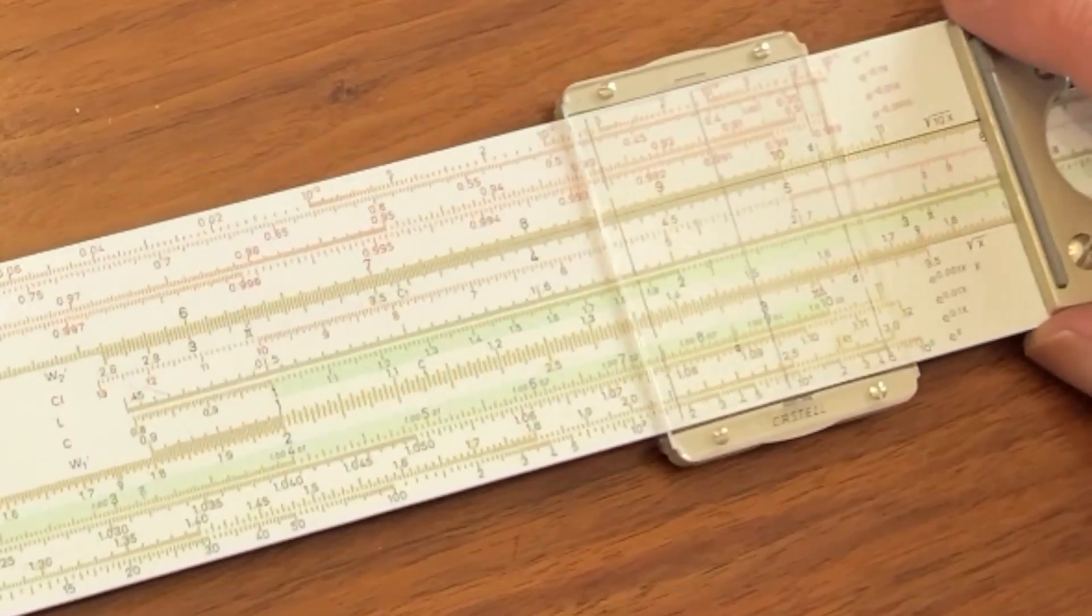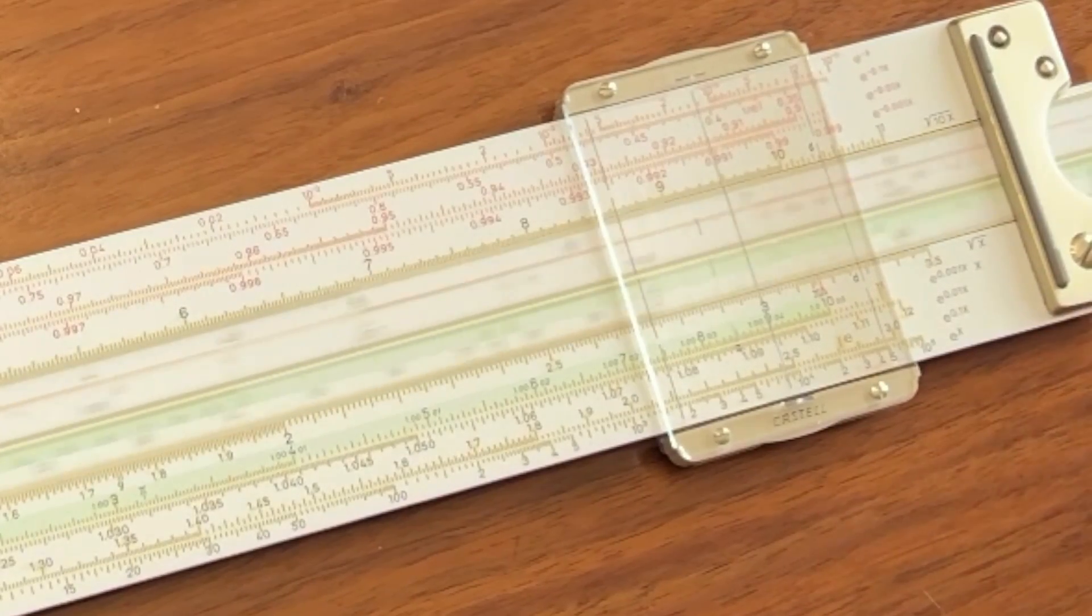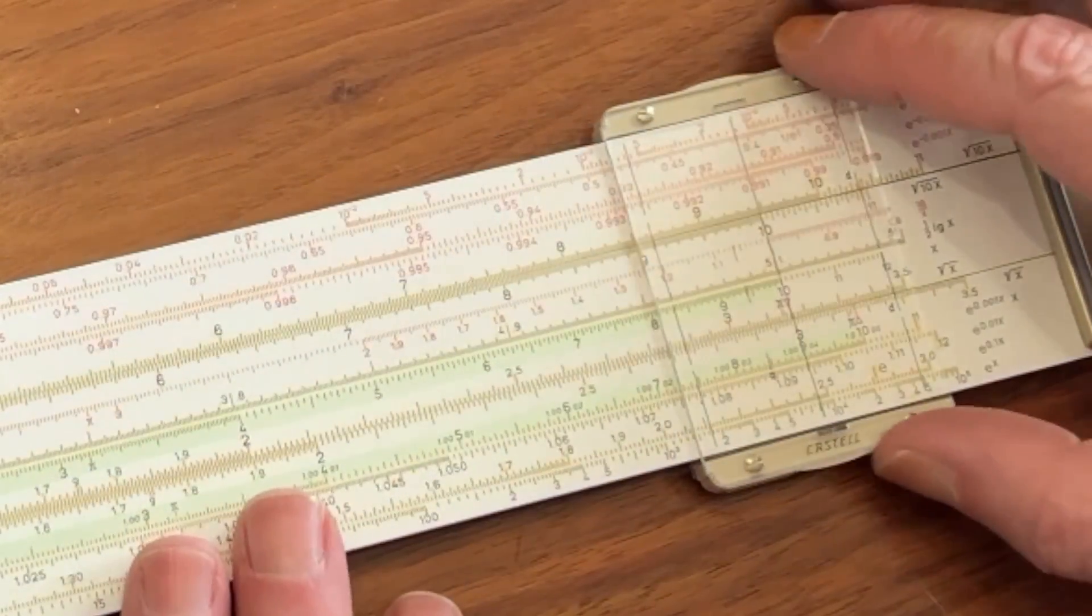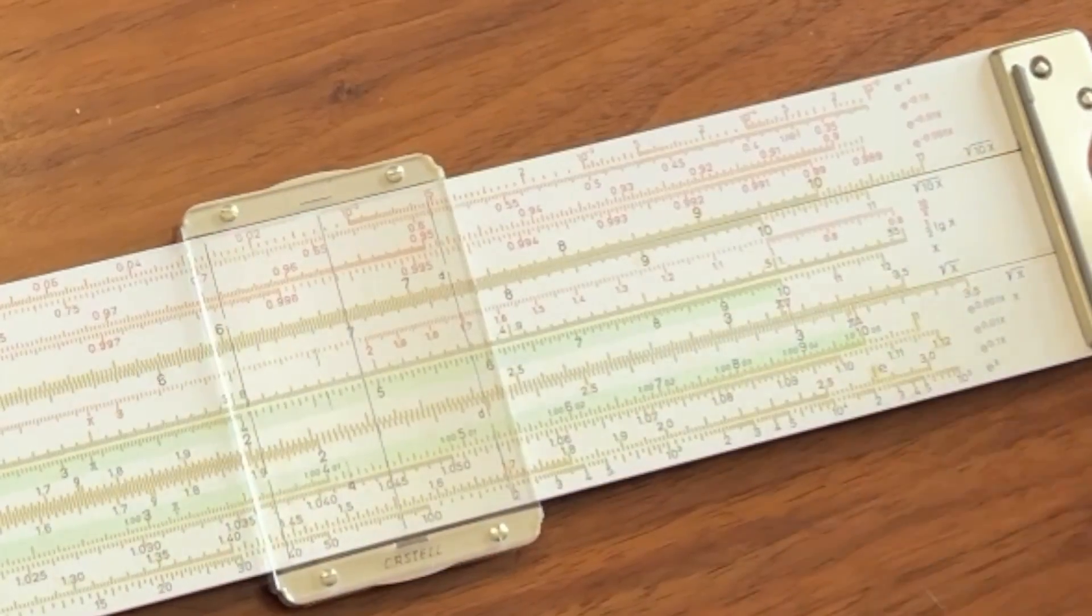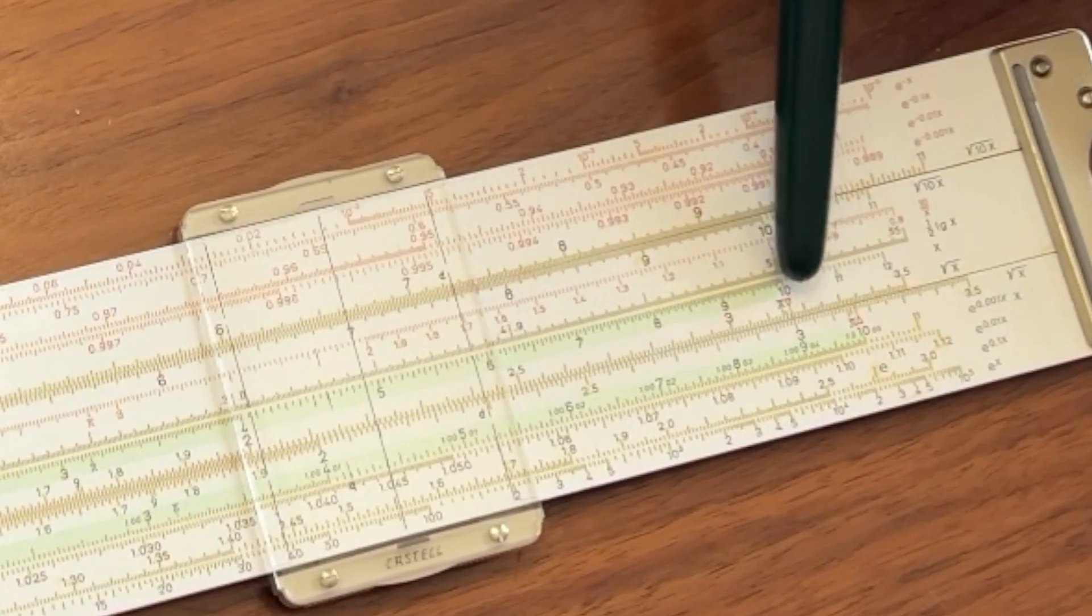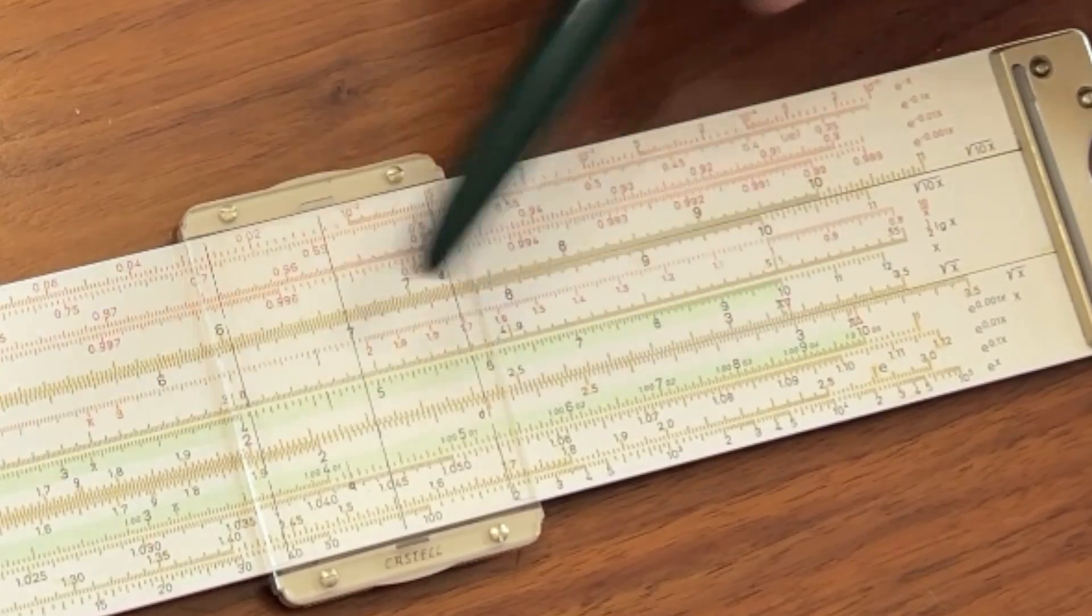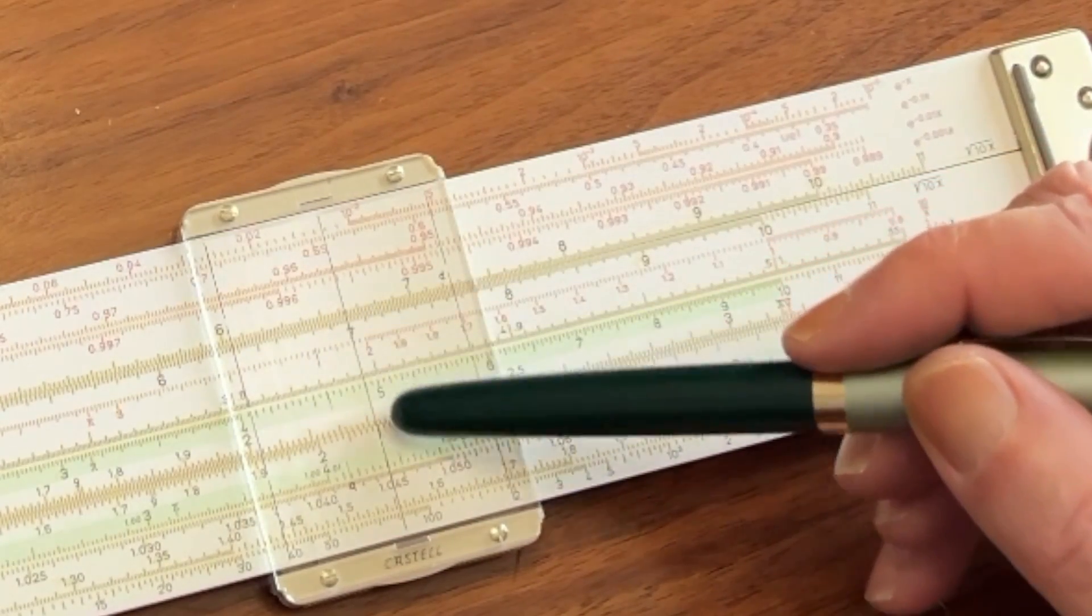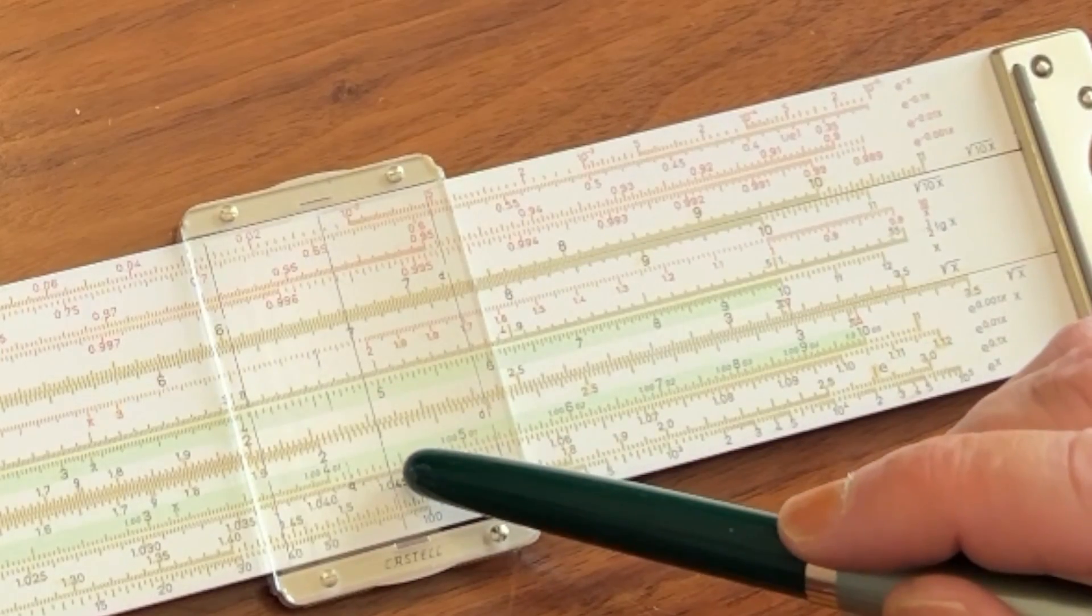What if you want to multiply 3 by, say, 7? All right, you have to use the other index here and come out to the 7 right here. Well, the problem is the answer is not above it like it was last time. Because we're coming from this index on the right as opposed to the index on the left, the answer is actually going to be on the opposite scale. And if you look straight down, there's 21.